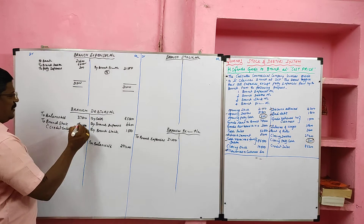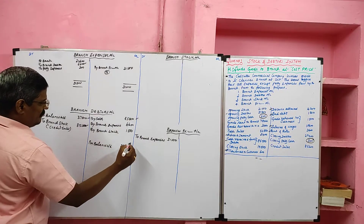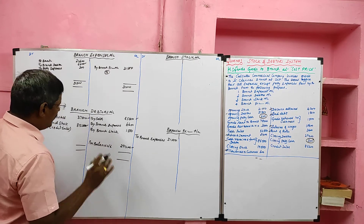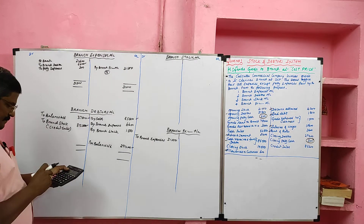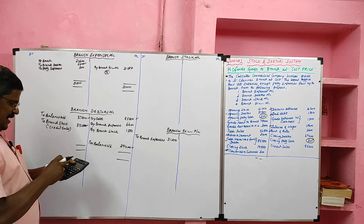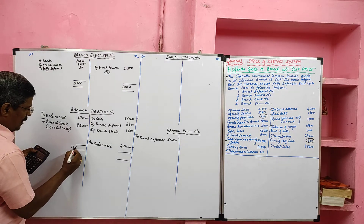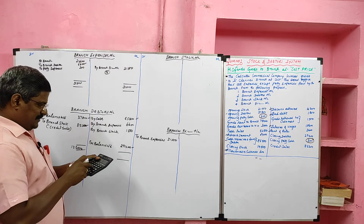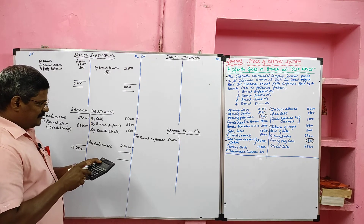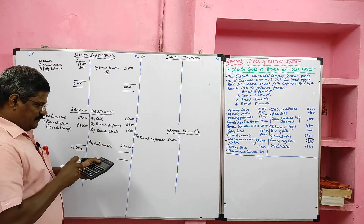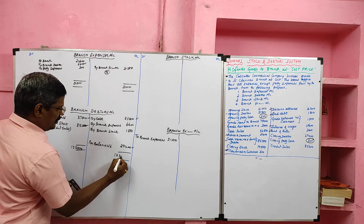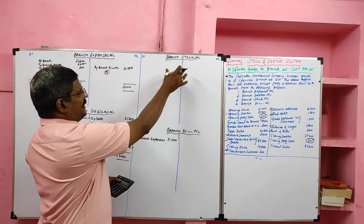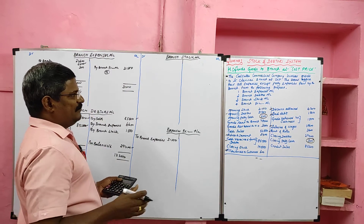Opening debtors, credit sales, cash received from debtors, and closing debtors — all four important pieces of information are given, so the Branch Debtor Account will definitely agree. Debit side total: 37,800 plus 85,200 equals 1,23,000. Credit side total: 85,500 plus 6,600 plus 1,500 plus 29,400 equals 1,23,000. Now we have to prepare the Branch Stock Account.